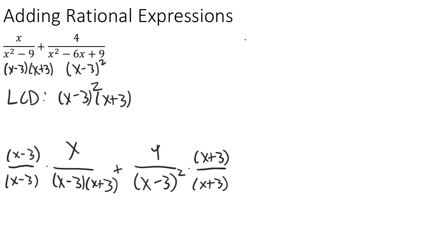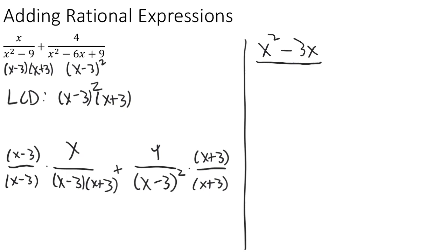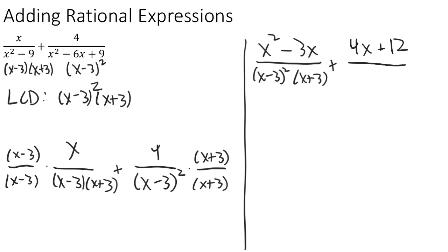Now we multiply. On the top of the first fraction we have x times (x minus 3). Distributing gives x squared minus 3x, and on the bottom we have our LCD: (x minus 3) squared times (x plus 3). For the second fraction, we multiply 4 times (x plus 3) on the numerator, giving 4x plus 12, and again the denominator is (x minus 3) squared times (x plus 3).